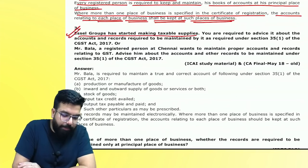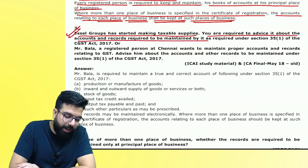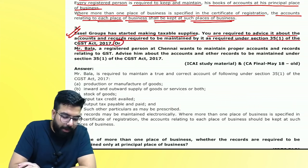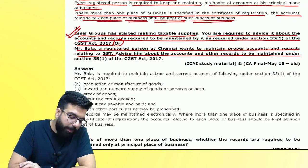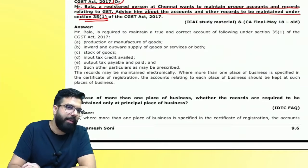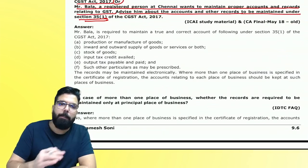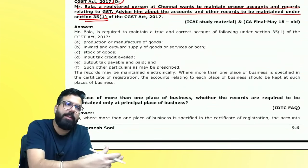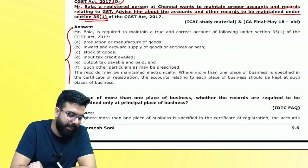Question: SL Group has started making taxable supply. Advise about accounts and records to be maintained under Section 35. Answer: PCOS accounts are required at the principal place of business. If there is an additional place of business, then accounts relating to that additional place are to be maintained at the additional place of business.